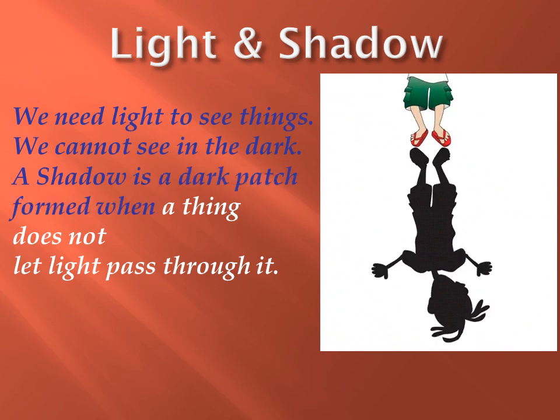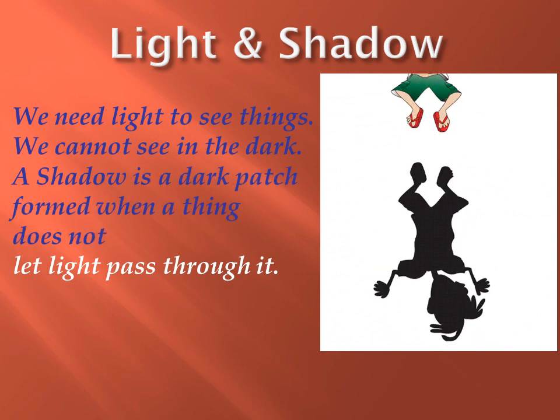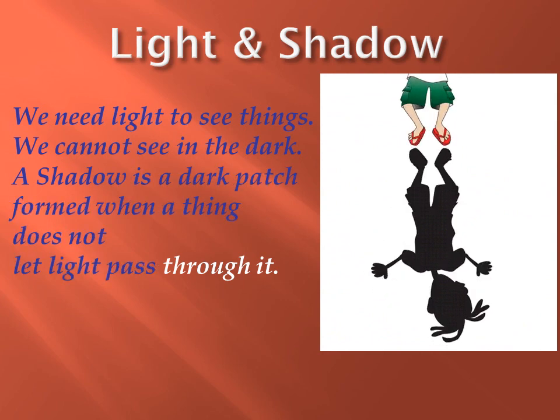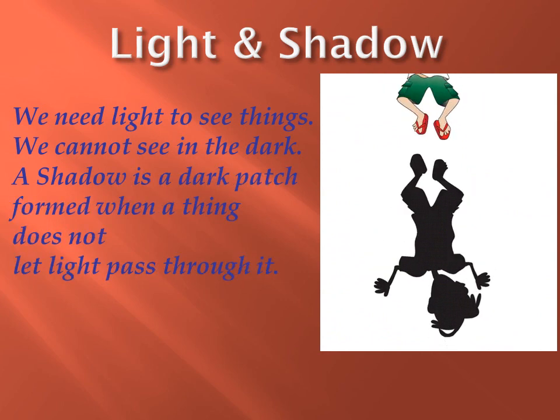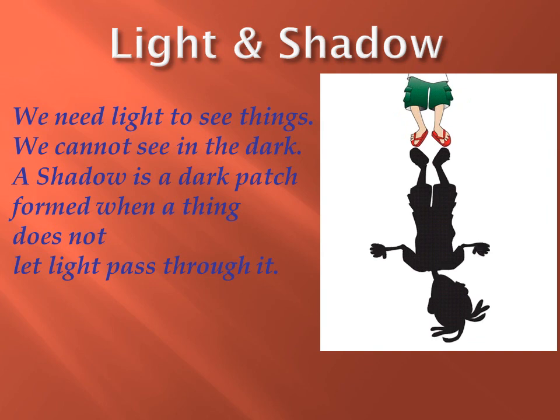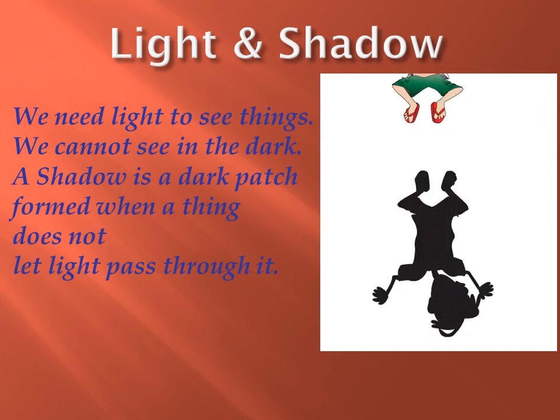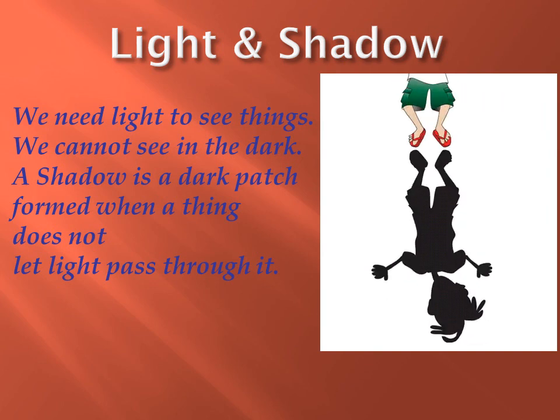Have you ever noticed a dark patch on the ground following you when you walk in the sun? This dark patch is called a shadow. A shadow is a dark patch formed when a thing does not let light pass through it.